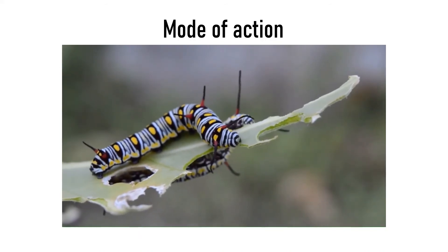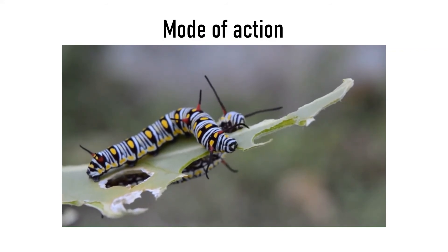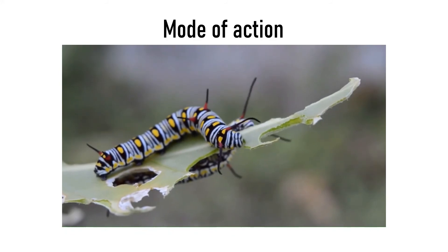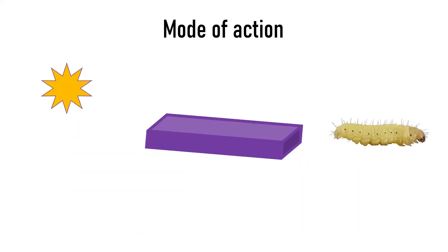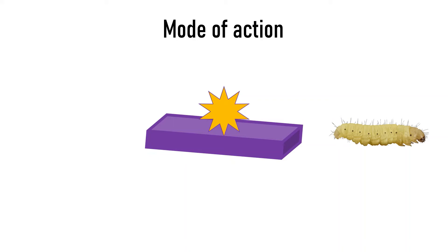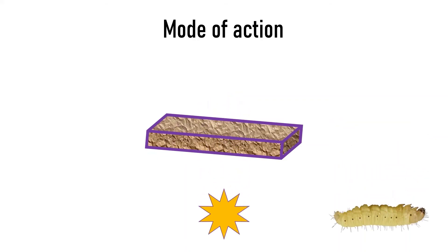The mode of action of Delta Endotoxins involves a specific interaction between the protein and the insect larval midgut. After ingestion by insect larvae, the protein crystals are solubilized proteolytically to release active fragments of the protein. This active fragment binds to the membrane of the midgut, then forms a pore to penetrate the epithelial cells, causing their destruction. Alkaline and acidic gut conditions of Coleoptera or Lepidoptera respond differently to a variety of these Delta Endotoxins.